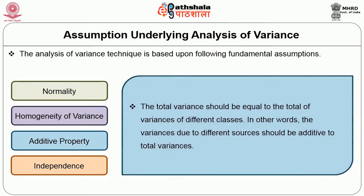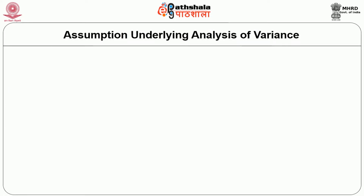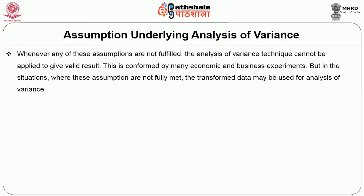The third assumption is the additive property: the total variance should equal the total of variances of different classes; variances due to different sources should be additive to the total variance. The next assumption is independence: the selection of samples should be random, independent, and equally likely. In case of samples not being independent, the problem of multicollinearity arises, which affects the inference of analysis of variance. It should be kept in mind that whenever any of these assumptions are not fulfilled, the analysis of variance technique cannot be applied to give valid results.